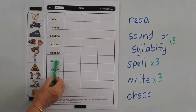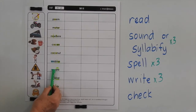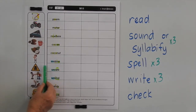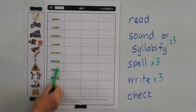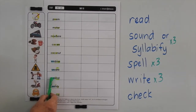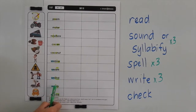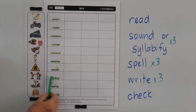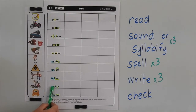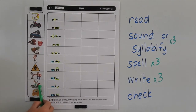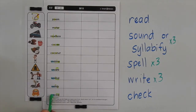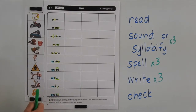Undress just means take clothes off. Unsafe just means dangerous. Unkind means being mean to others, not being the nicest person you can be to others. Untidy means that it's a mess or someone is being messy, and uncool implies that you're not doing the popular thing.